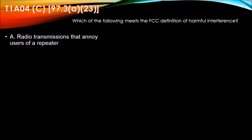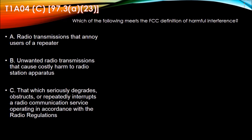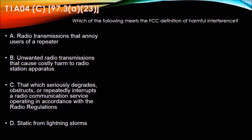Moving to T1A04: Which of the following meets the FCC definition of harmful interference? Answers are A. Radio transmissions that annoy users of a repeater. B. Unwanted radio transmissions that cause costly harm to radio station apparatus. C. That which seriously degrades, obstructs, or repeatedly interrupts a radio communications service operating in accordance with the radio regulations. Or D. Static from a lightning storm.